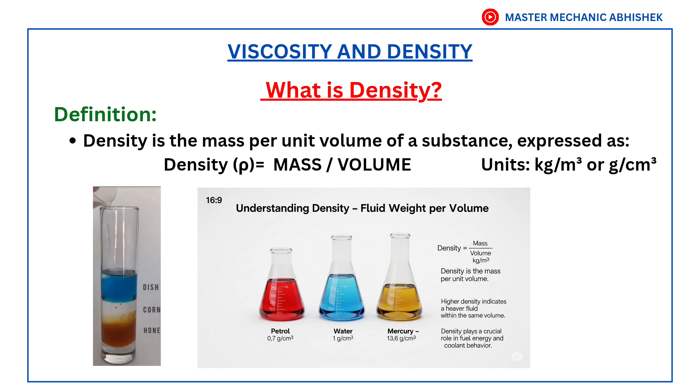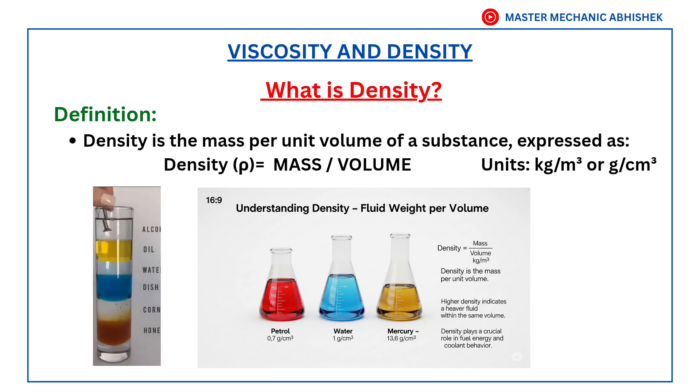What is density? Density is the mass per unit volume of a substance, expressed as: density (ρ) equals mass divided by volume. Units: kilogram per cubic meter or g per cc.